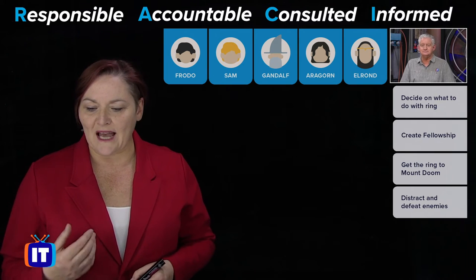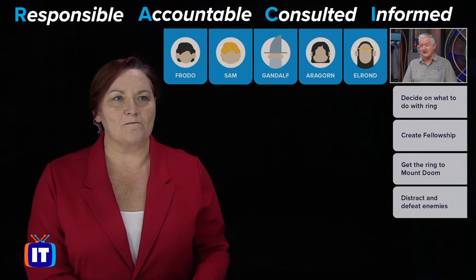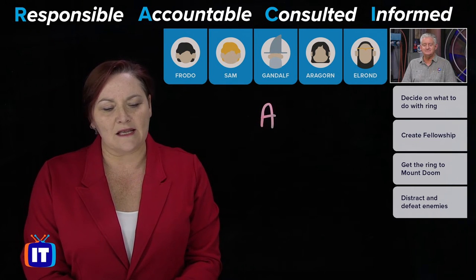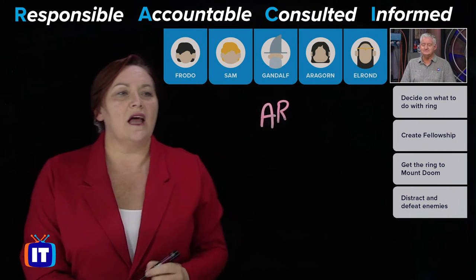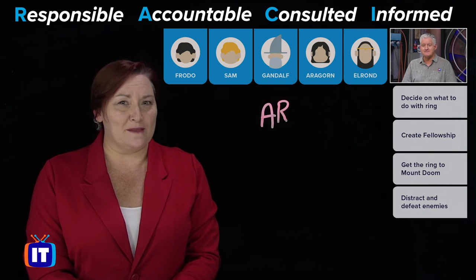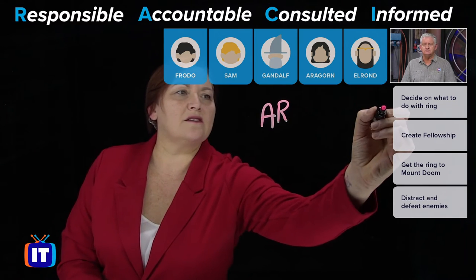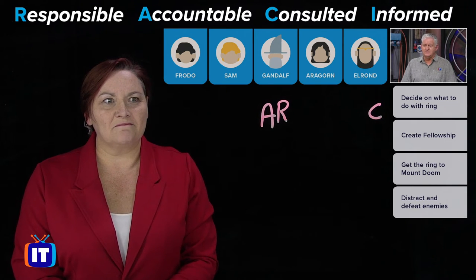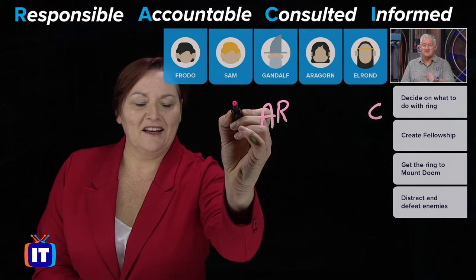Somebody has to decide what to do with the ring. Who ensures that a decision is made? Gandalf the Grey. And who is actually responsible — who makes the decision? That's also Gandalf the Grey. No one else makes it. Is anybody's opinion sought? That would be Elrond — we're asking for Elrond's opinion. Do we tell anybody else? Yes, we're going to tell Sam, because Sam is going to help Frodo.